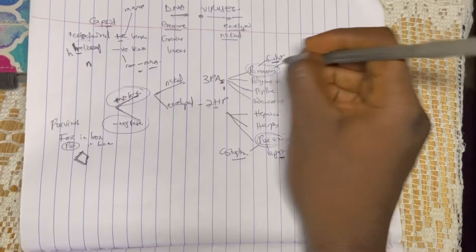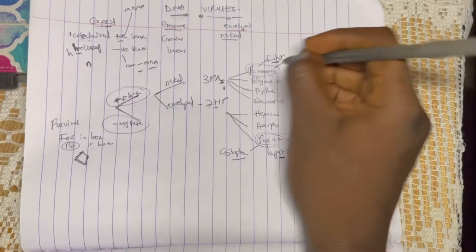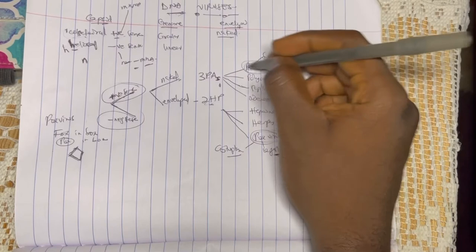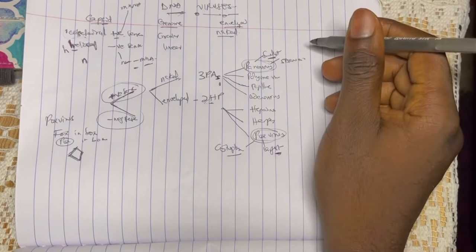Parvo virus is the smallest. All viruses are double-stranded except parvo virus, which is a single-stranded DNA. That will probably help you remember that.